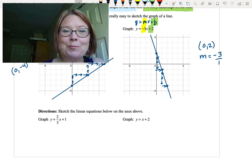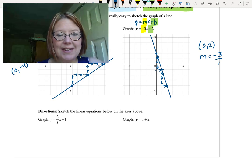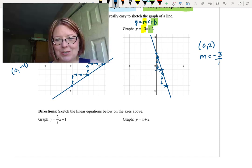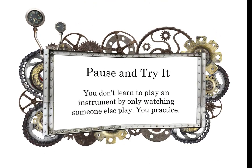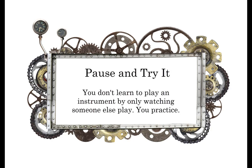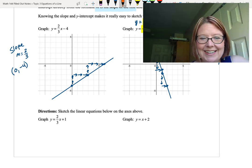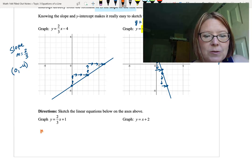This is a great time to pause the video and make sure that you can do this. I want you to sketch y equals two-thirds x plus 1 and y equals x plus 2. You're just going to sketch those on the axes we've already got on the page. Pause the video and give it a try. Okay, you're back. Let's see how you did.